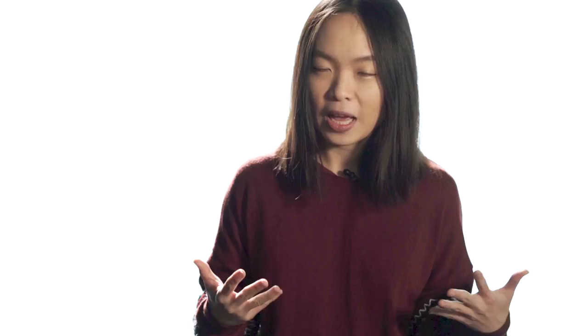If you have any questions, you can ask away in the comments section, or feel free to just let me know how you did. So to recap, your impressions are the number of times your post is shown to people, while your Social Media Reach is based on the number of people who see that post. These terms kind of overlap, and some people even refer to Social Media Reach as unique impressions, which makes sense.